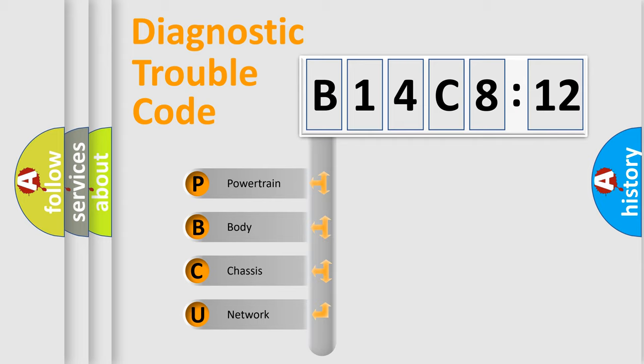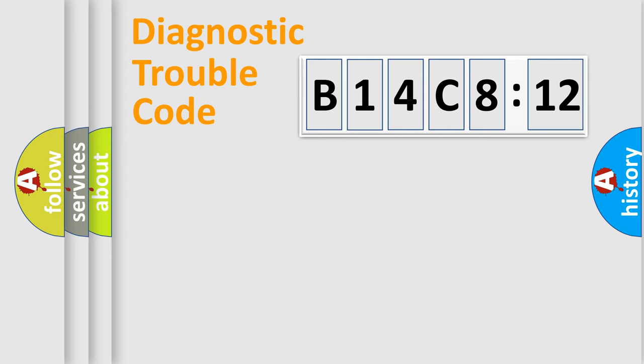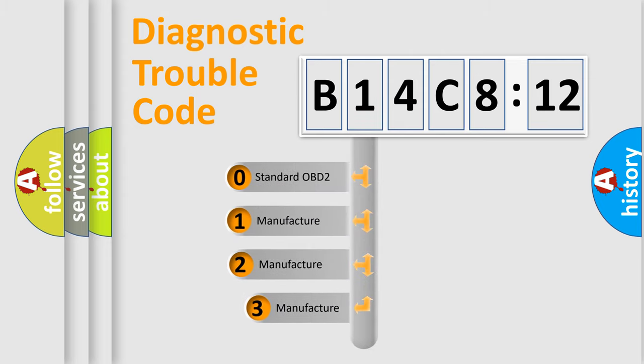We divide the electric system of the automobile into four basic units: Powertrain, Body, Chassis, and Network. This distribution is defined in the first character code.